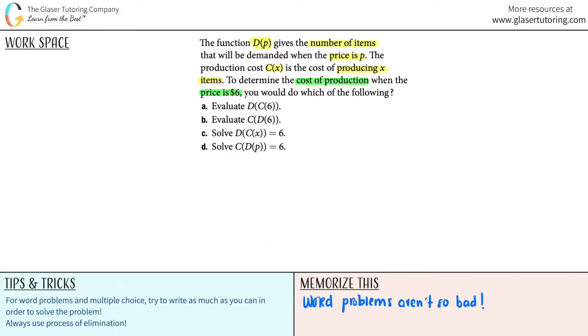So first off, this is a multiple choice question. Now basically what is similar and what is different between a through d? Well, we have to use this 6 somewhere, right? And what did they tell us was the 6?